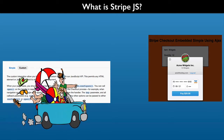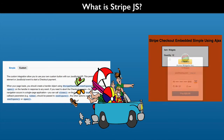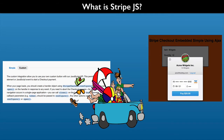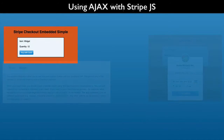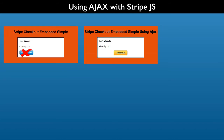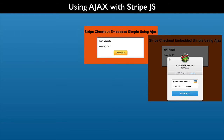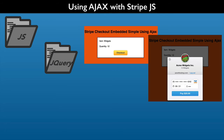For example, we can open and close the checkout form in our JavaScript code, and we can do that with our own customized button instead of the Stripe default button. StripeJS provides a notification when the user successfully checks out, and we can then respond using our own JavaScript and libraries like jQuery.